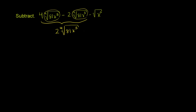And then of course we still have this minus the regular principal square root of x to the third. Now I want to try to simplify what's inside of these under the radical sign so that we can actually take the fourth root, and over here actually take the principal square root. So first of all, let's see if 81 either is something to the fourth power, or at least can be factored into something that is a perfect fourth power.